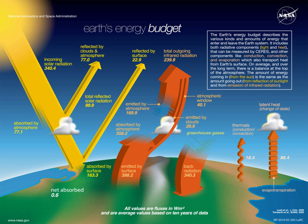Called the albedo of Earth, around 35 units are reflected back to space: 27 from the top of clouds, 2 from snow and ice-covered areas, and 6 by other parts of the atmosphere. The 65 remaining units are absorbed — 14 within the atmosphere and 51 by Earth's surface. These 51 units are radiated to space in the form of terrestrial radiation: 17 directly radiated to space and 34 absorbed by the atmosphere — 19 through latent heat of condensation, 9 via convection and turbulence, and 6 directly absorbed. The 48 units absorbed by the atmosphere (34 from terrestrial radiation and 14 from insolation) are finally radiated back to space. These 65 units balance the 65 units absorbed from the Sun, maintaining zero net gain of energy by the Earth.